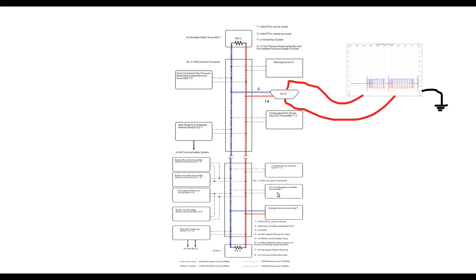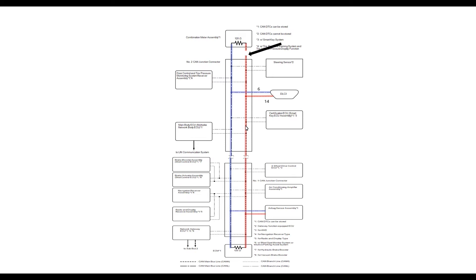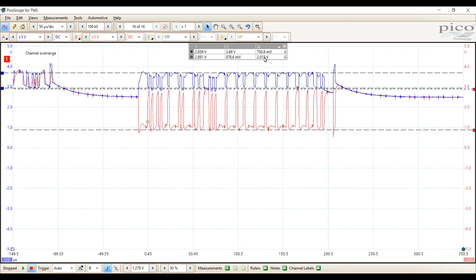When it comes to an open on CAN low, using the example of our CAN network, this is the exact opposite of before. Now CAN high is going to be going through a full 120 ohm resistor, while CAN low will not be going through a resistance back at terminal 14 of the DLC 3. Therefore, the amplitude of CAN low is higher than one volt and the amplitude of CAN high is lower than one volt. So just by looking at the pattern, I can tell that my open is on CAN low.